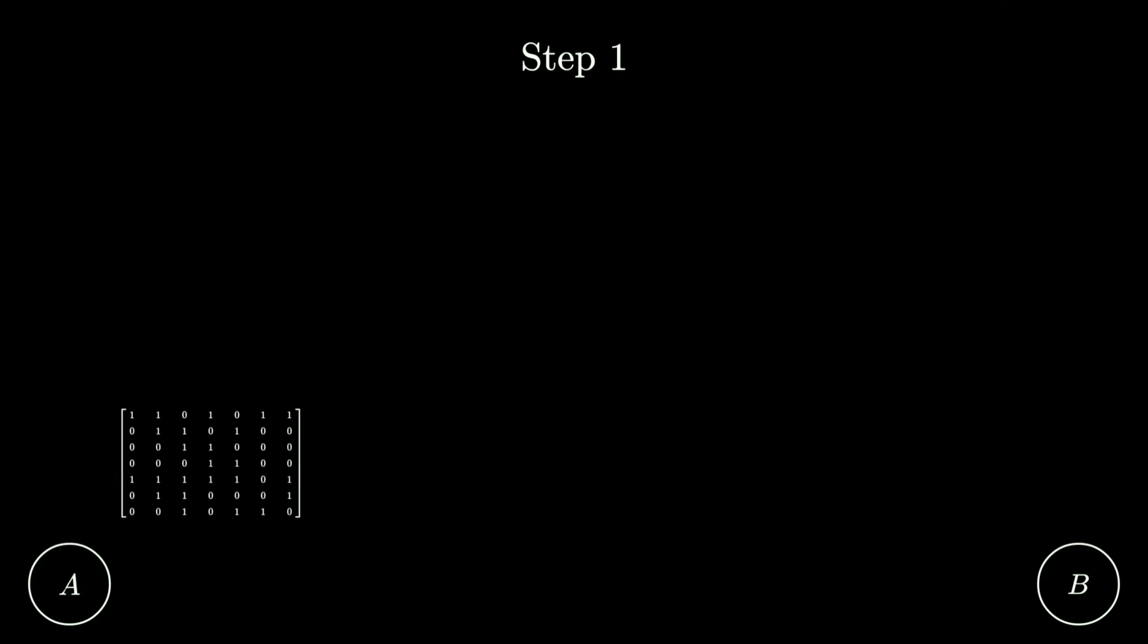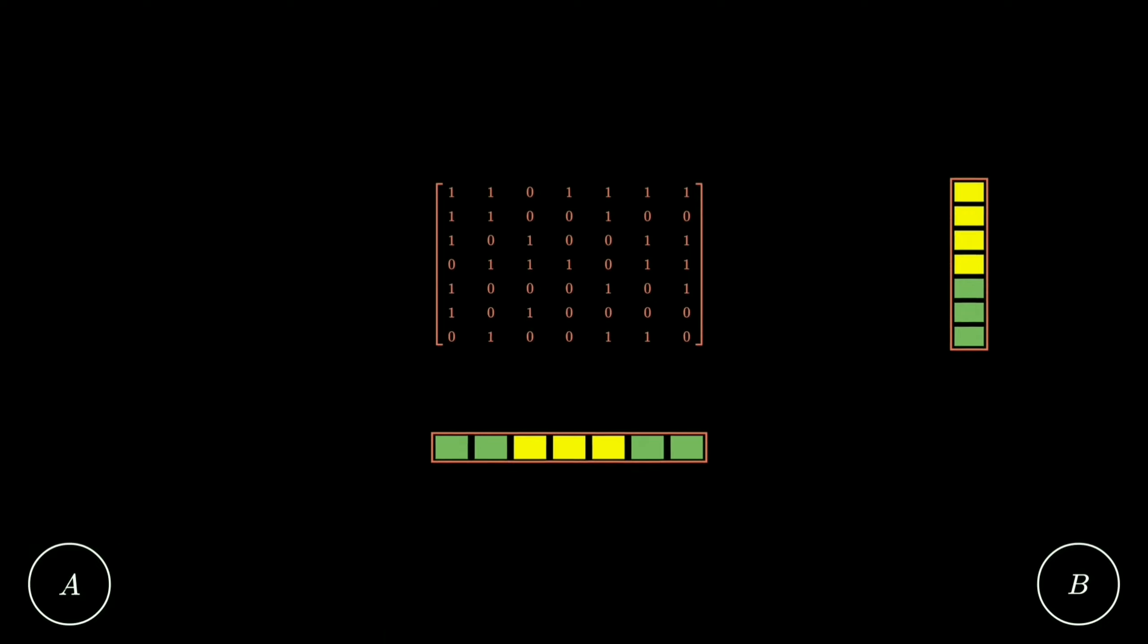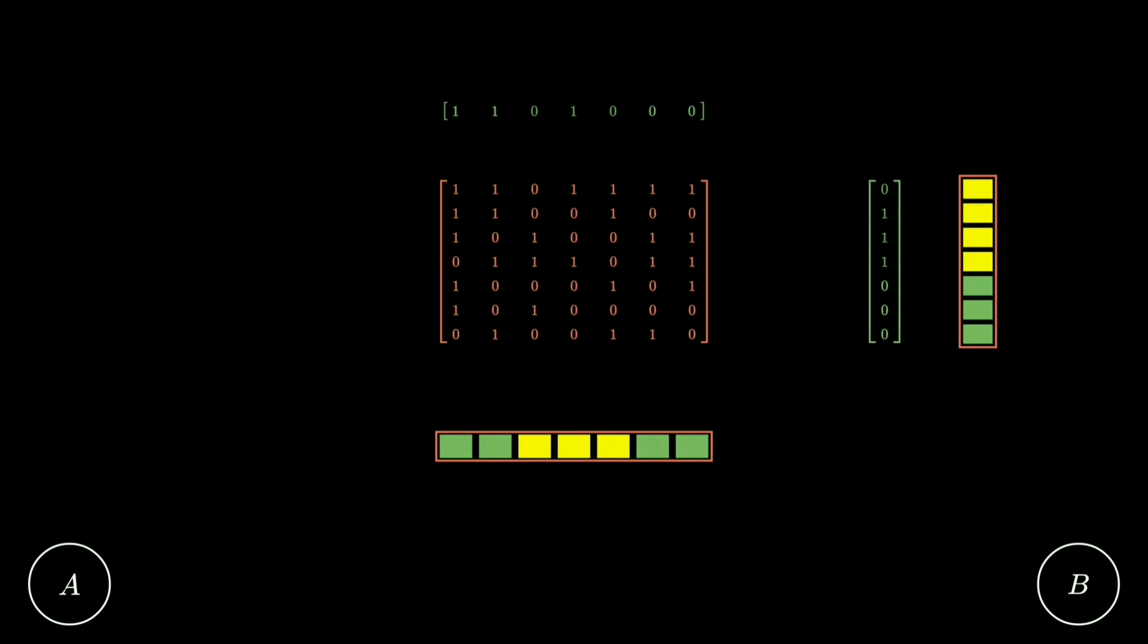Also along with the matrix, the block rules are randomly generated within boundaries and publicly sent along the matrix and solution vector. A and B will use a common pseudo number generator seed to generate and regenerate the matrix and block rules.